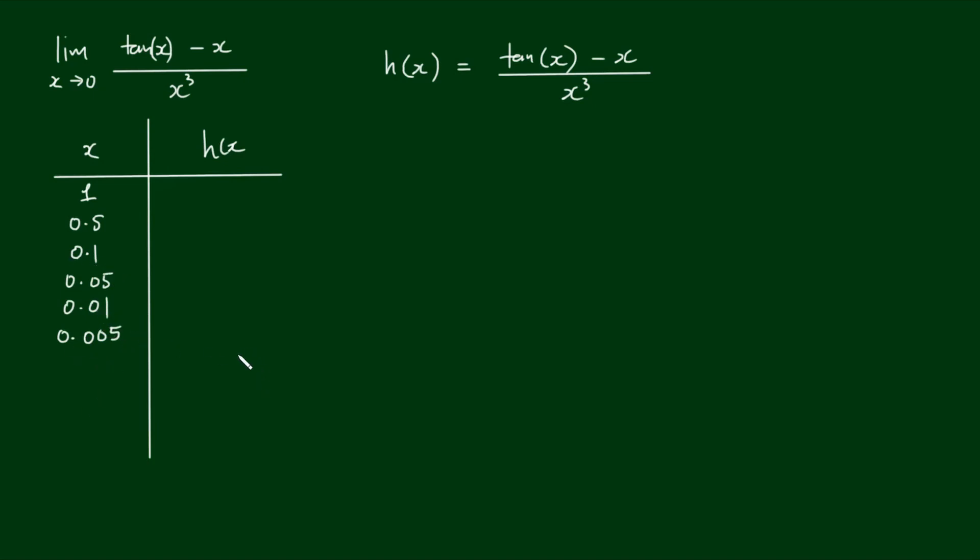So when I plug the number 1 into the calculator for the function h of x, I get 0.5574 to the first four decimal places. See if you can verify all of these values as you go along as well. With x equals 0.5, I get 0.3704.